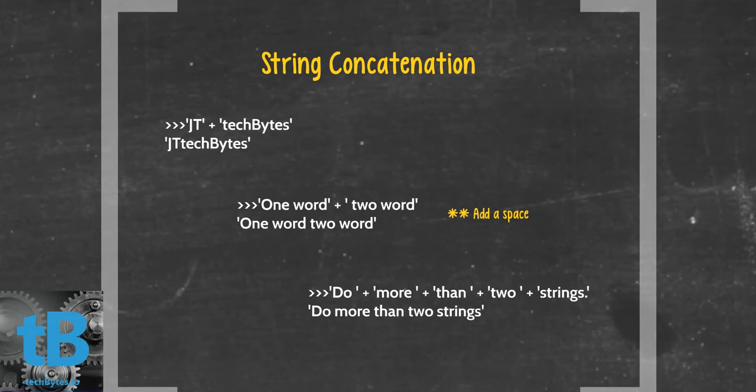String concatenation. We can add our strings together. For instance, if you're operating inside of IDLE or inside your Python command line, you could type in the string jt plus tech bytes. And you would notice that there's no space there. It just simply adds those two words together, one after the other.